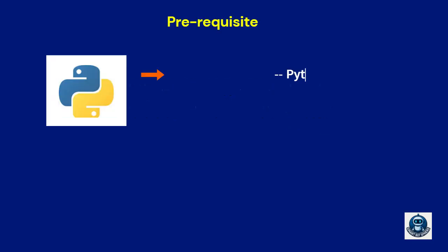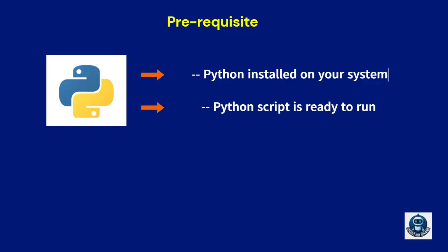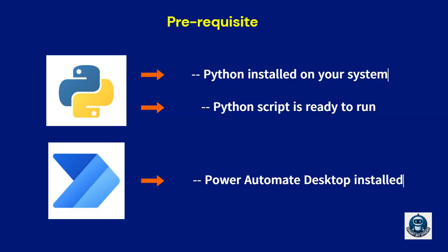First, make sure you have Python 2.7 or above installed on your system. You must also have your Python script ready to run. And of course, you'll need Power Automate Desktop installed on your PC.